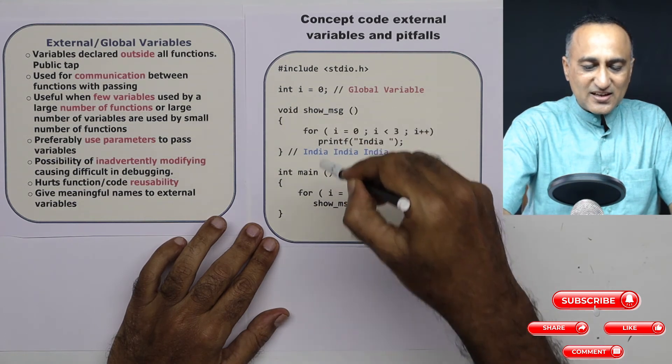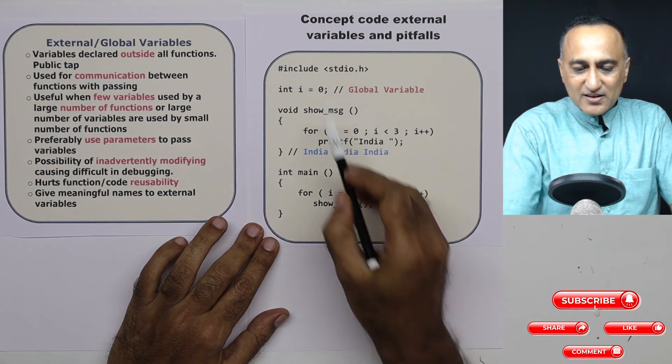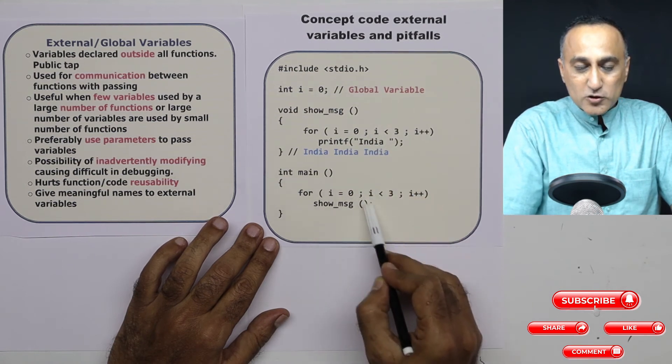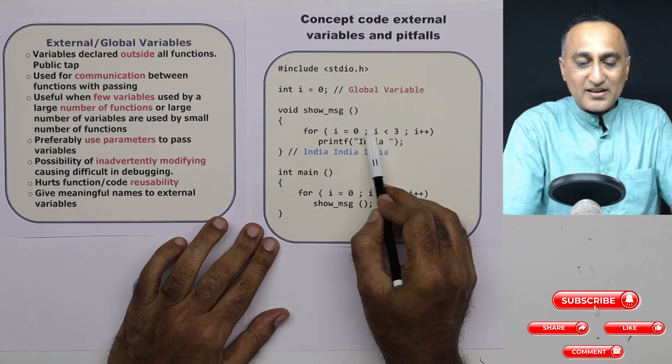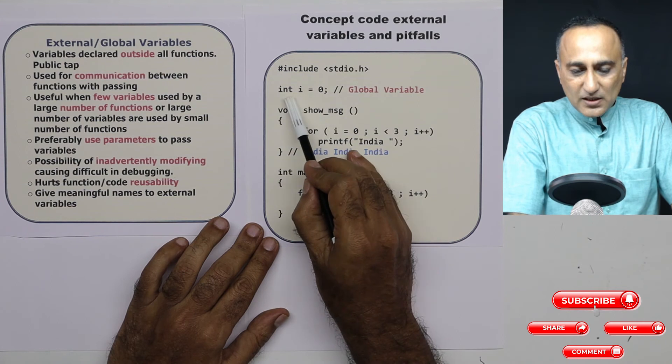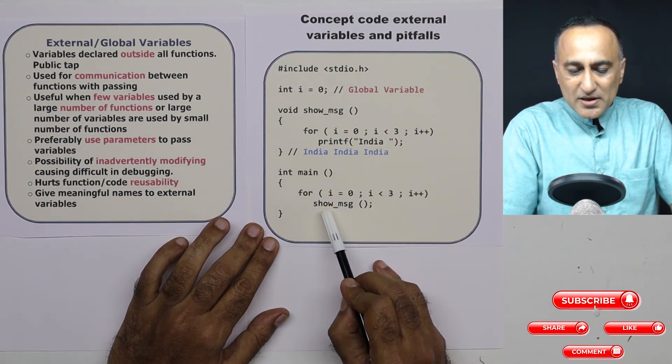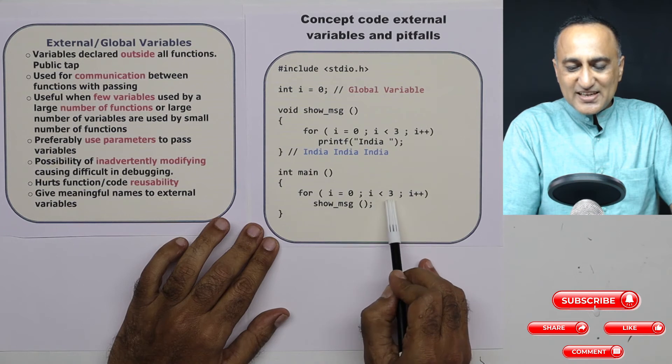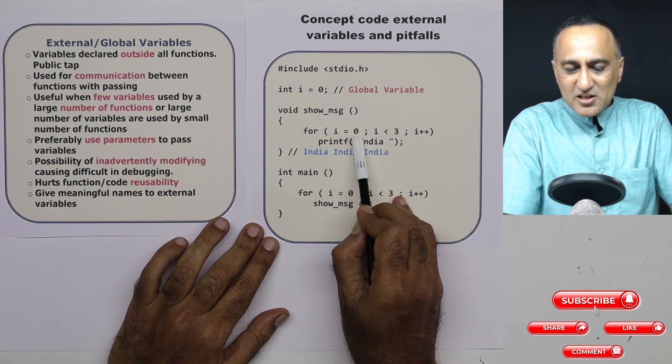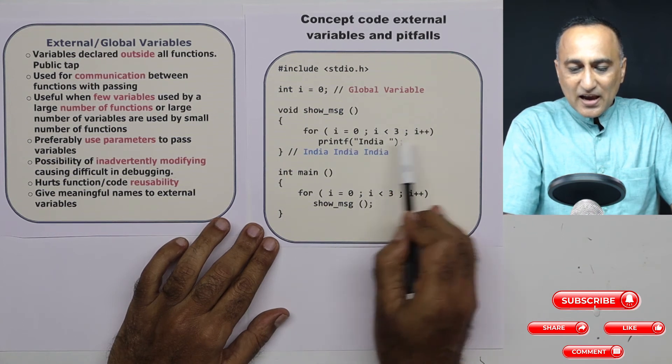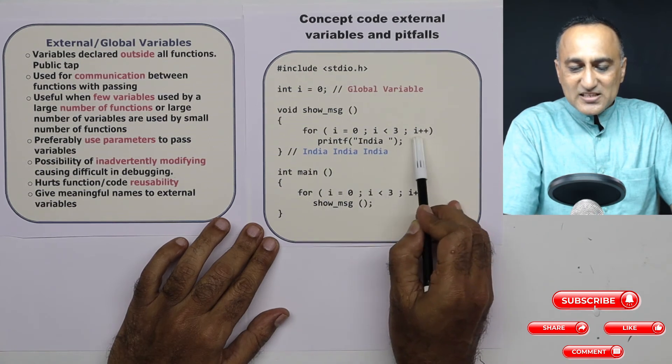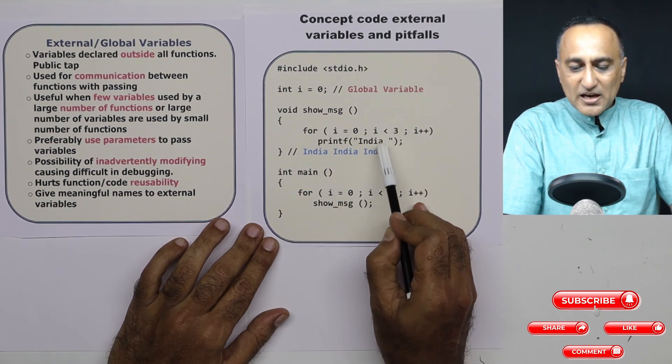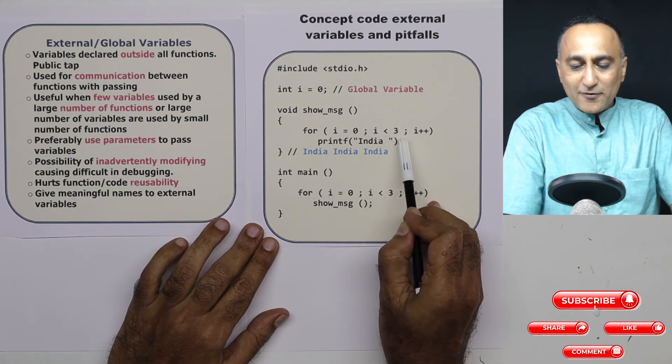This value of i can be accessed here, it can be accessed here. The i I am referring here is this i, the i I am referring here is this i. So if I change the value of i here, it will also affect here, or if I change the value of i here, it will also affect here. So let's try to understand the program. Initially i is 0. So what I am doing is i equals 0, i less than 3, the function show_msg. 0 is less than 3. So I am going here and again I am giving the initial value of i is 0 till i becomes 3. I am printing India India India three times. At some point i will become 3. The first time it prints i becomes 1, second time it prints i becomes 2, third time it prints i becomes 3. Now 3 is not less than 3. So it will fail and it will come back here.